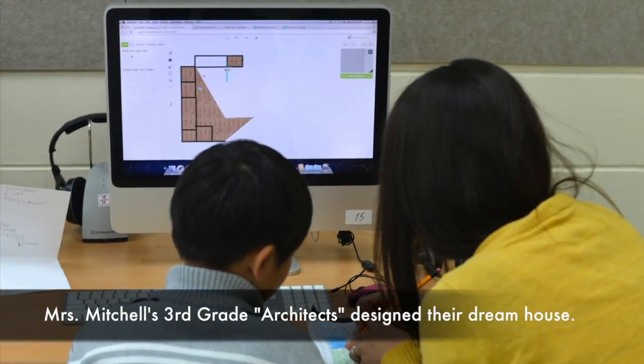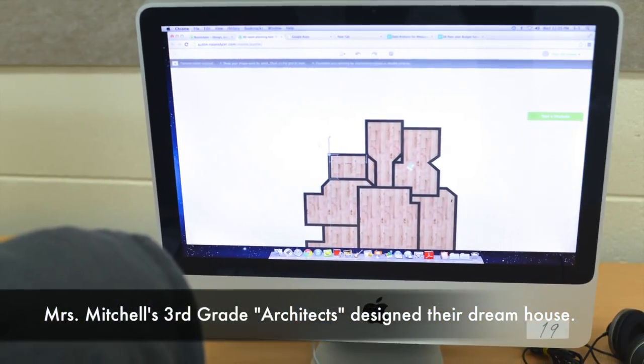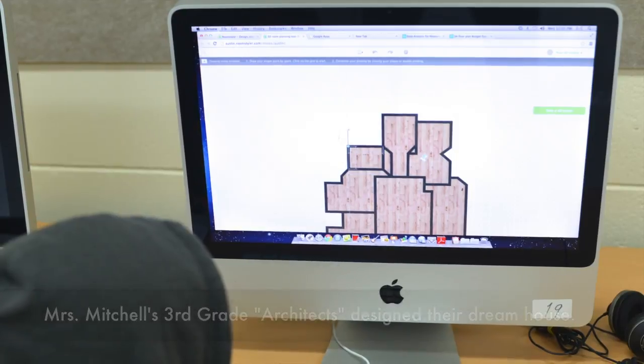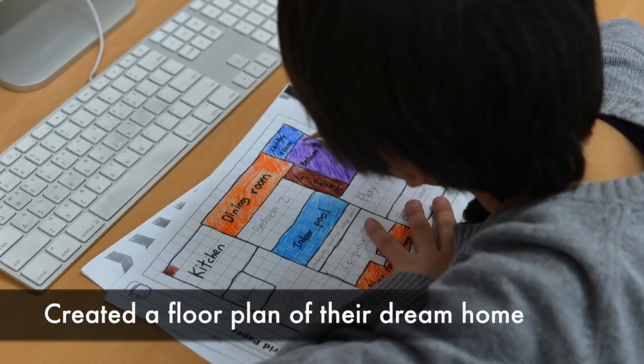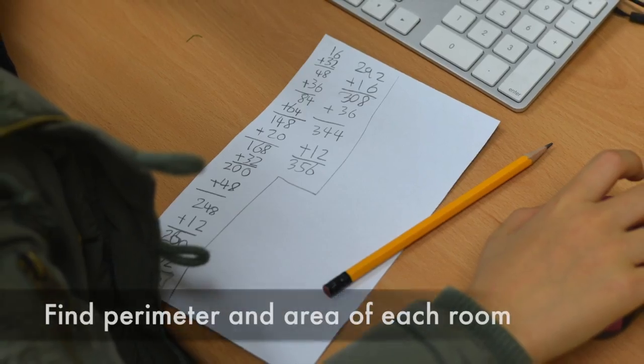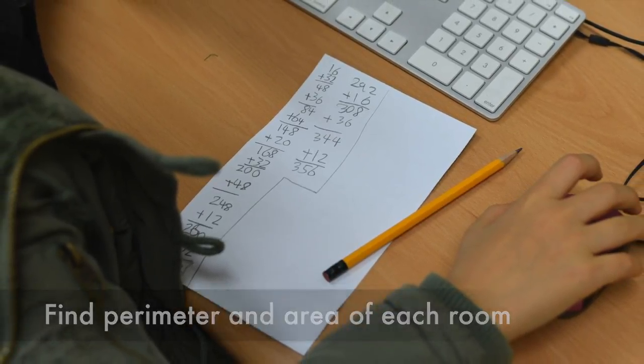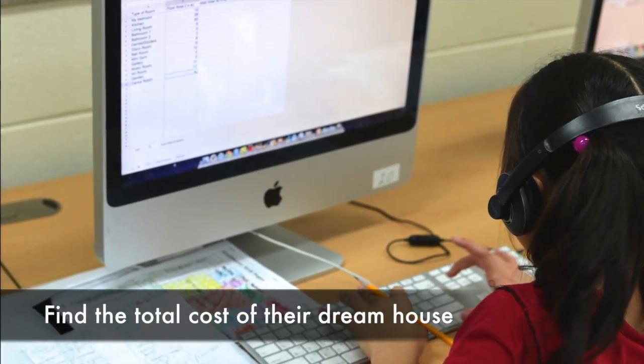Mrs. Mitchell's third graders took on the role of architects and designed their own dream house. They were required to create a floor plan, find the perimeter and area of each room, and find the total cost of their house.